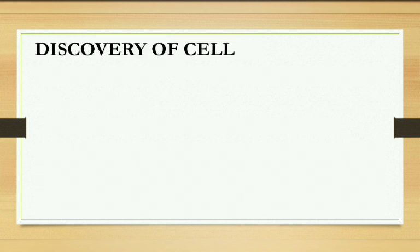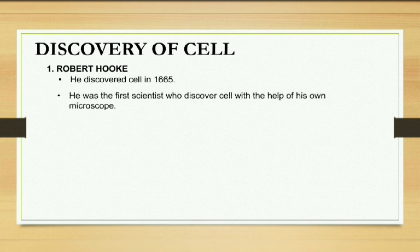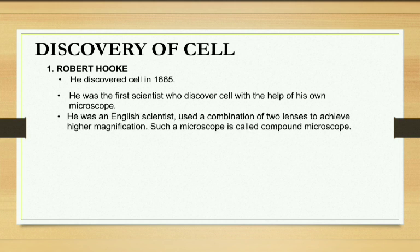The next topic is discovery of cell. The first name that comes in the discovery of cell is Robert Hooke. He discovered cell in 1665. He was the first scientist who developed his own microscope with the help of two lenses with high magnification power — basically a compound microscope.